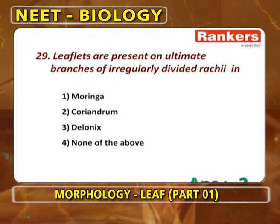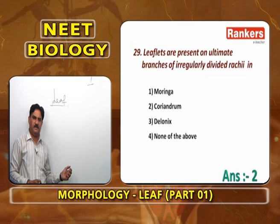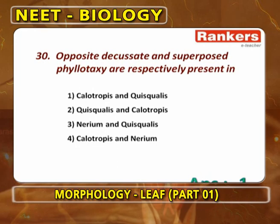Moringa has tripinnately compound leaves, Delonix has bipinnately compound leaves, and Coriandrum has multipinnately compound (decompound) leaves. Opposite decussate and superposed phyllotaxy are respectively found in Calotropis and Quisqualis.